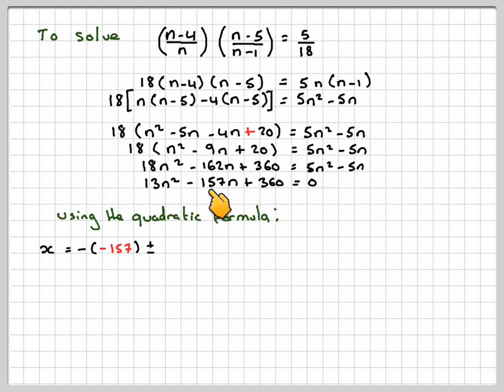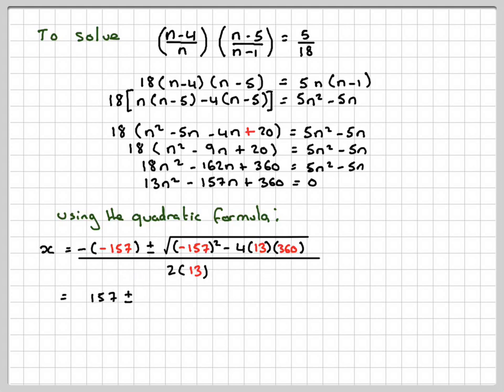So x is minus b. So it's minus minus 157 plus or minus minus 157 squared. Make sure you put this into brackets, minus 4 times 13 times 360, all over 2a. So working slowly, that will give me 157. The square root of all this is 5929 over 26.